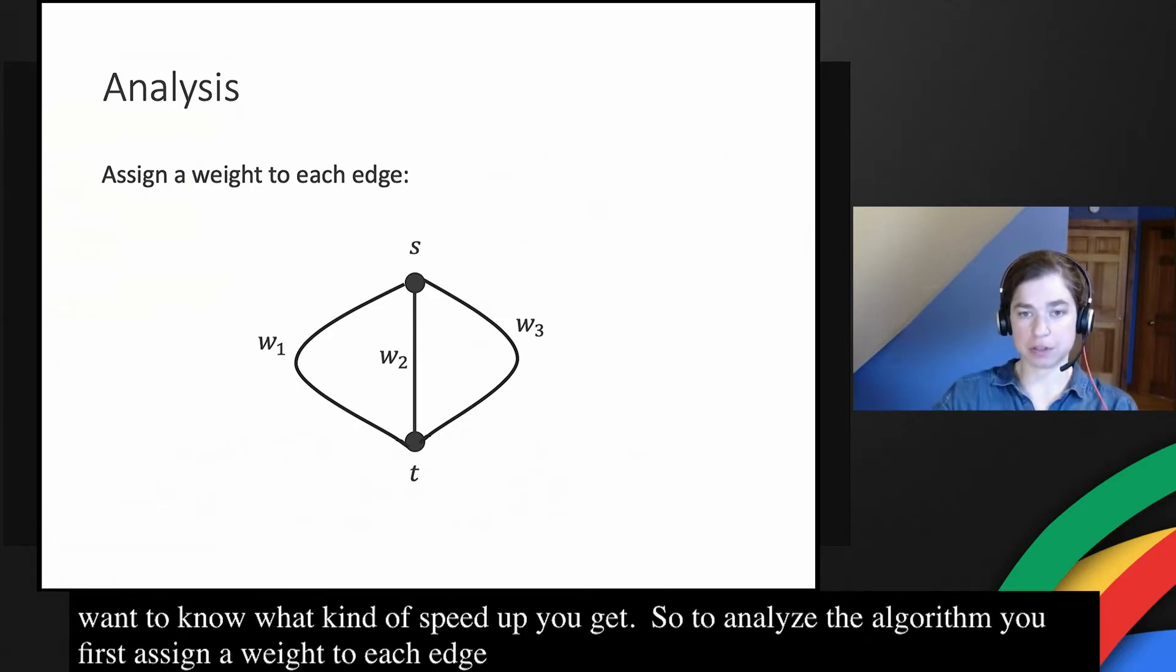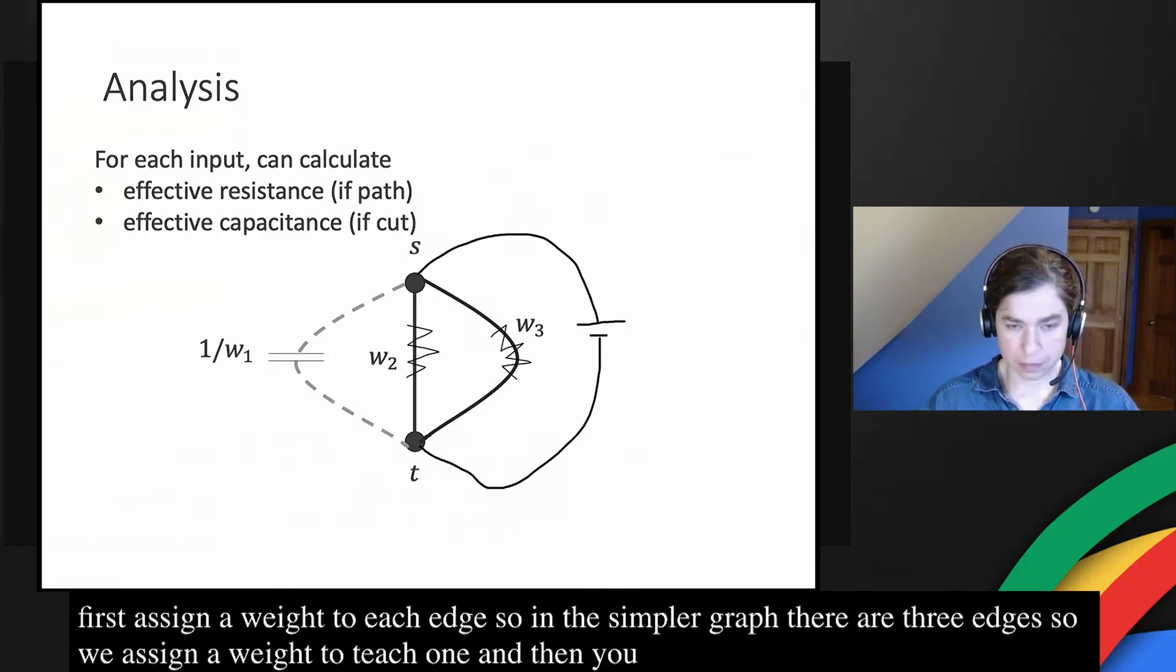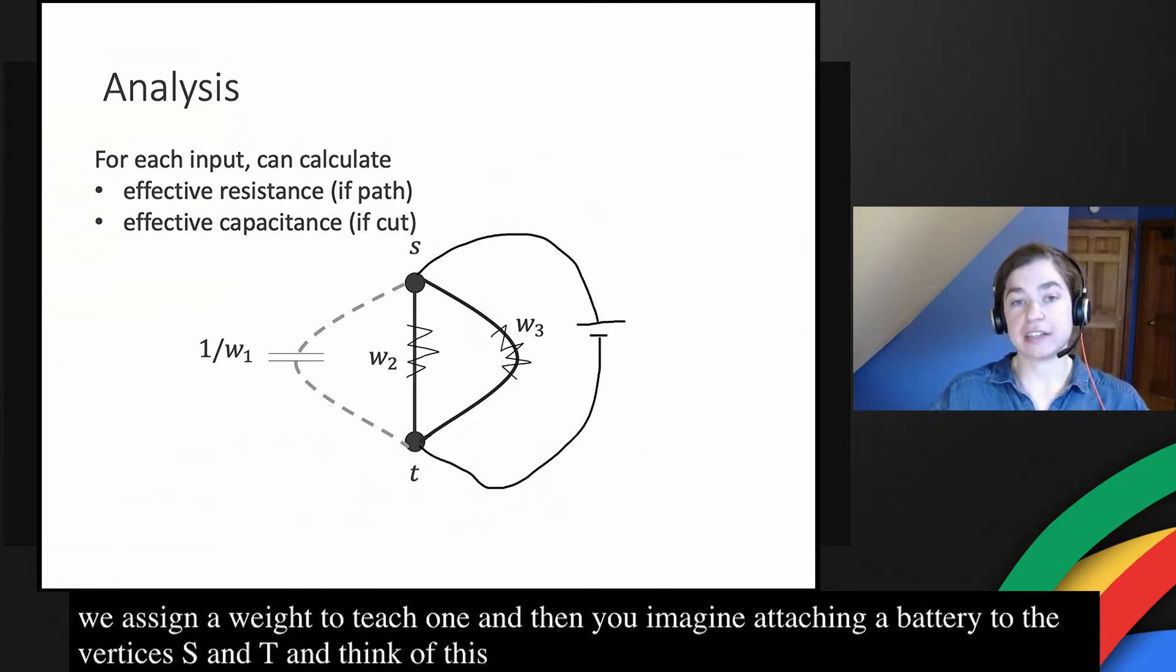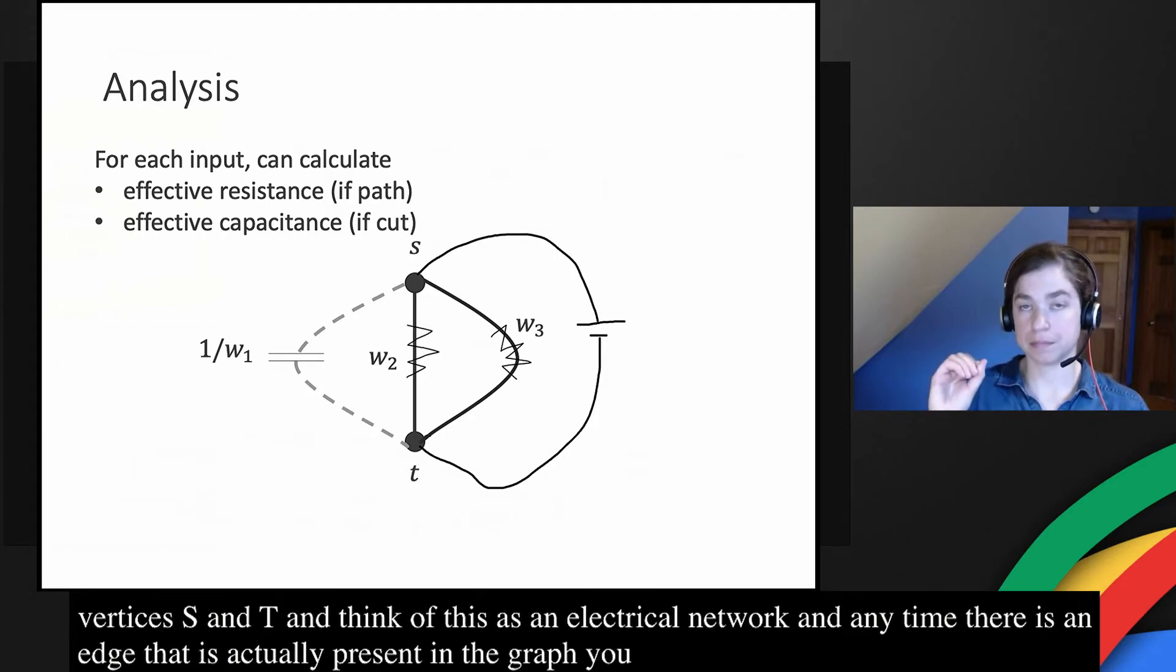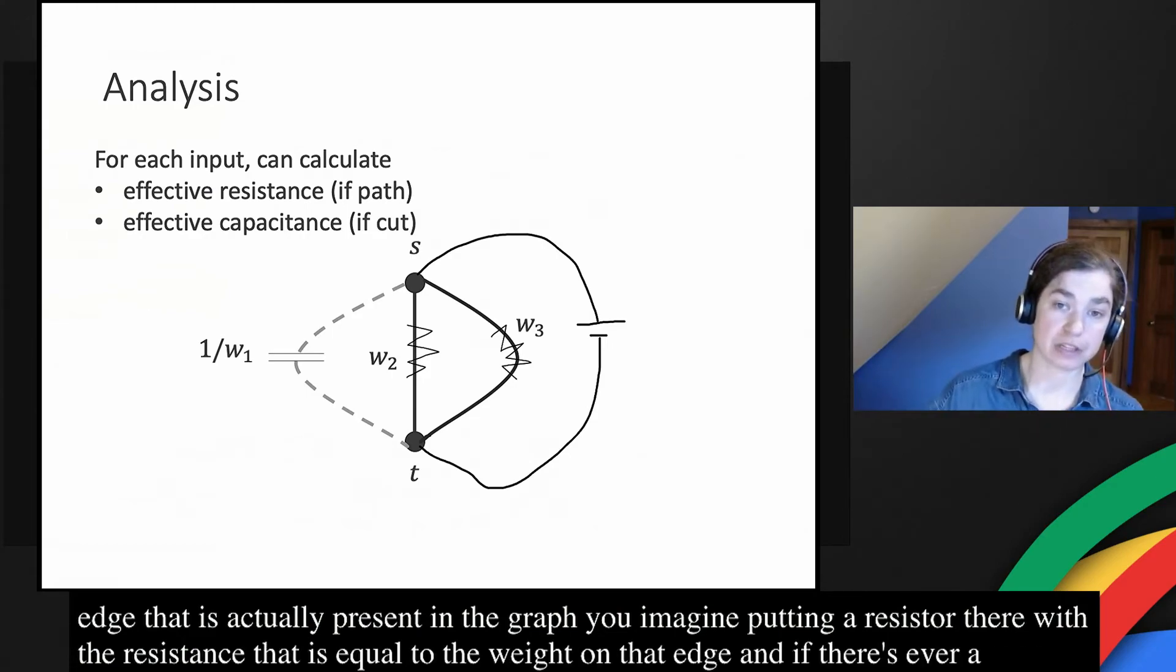To analyze the algorithm, you first assign a weight to each edge. In the simpler graph, there are just three edges. So we assign a weight to each one. And then you imagine attaching a battery to the vertices s and t. And you think of this as an electrical network.